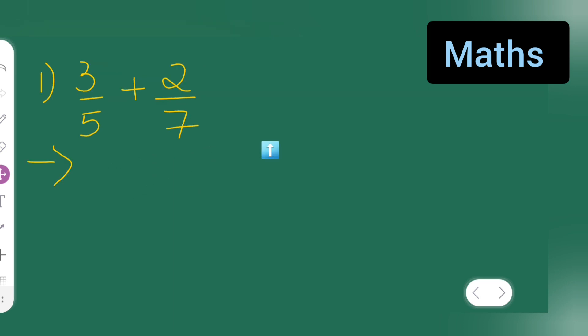So let us start. First you'll write down this: 3 upon 5 plus 2 upon 7 is equal to, cross multiply. 3 times 7 are 21 plus 5 times 2 are 10 upon 5 times 7 are 35.